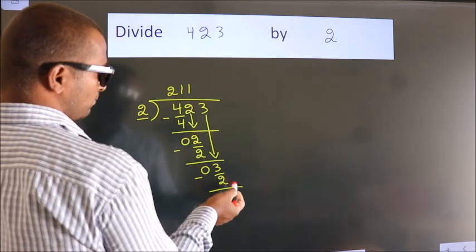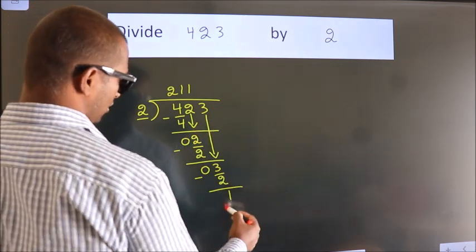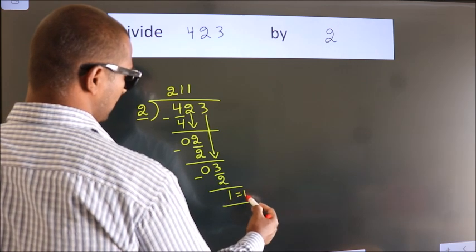No more numbers to bring it down. So, we stop here. This is our remainder. This is our quotient.